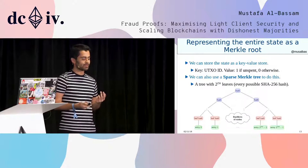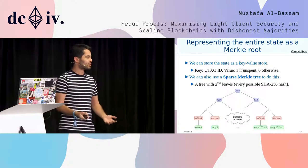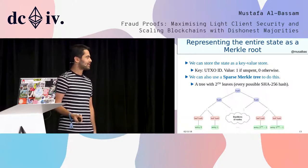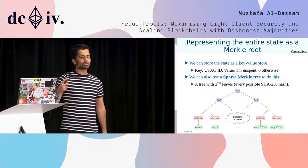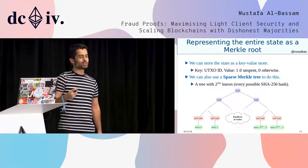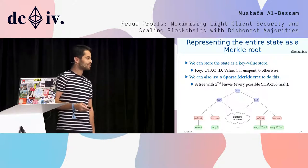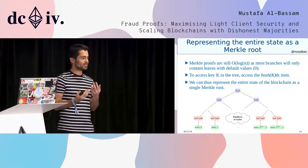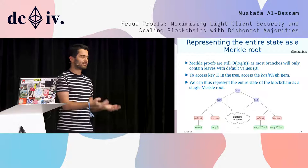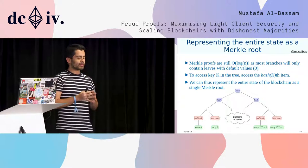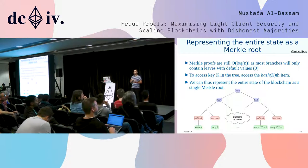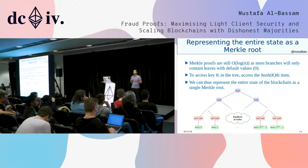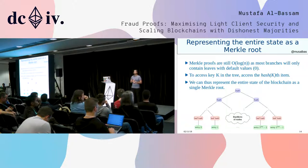The basic idea of a sparse Merkle tree is that it's basically a normal Merkle tree but with an insanely large number of leaves. If you wanted to represent every single possible SHA256 hash, then the size of your Merkle tree would have 2 to the power of 256 leaves. There are neat tricks you can use: since most of the leaves will be empty with a zero or default value, the vast majority of intermediate nodes in this tree will have the same value, so you don't have to recompute every single node. It is pretty much as efficient as a standard Merkle tree.